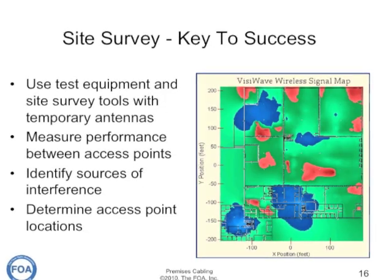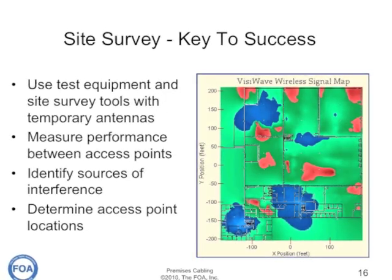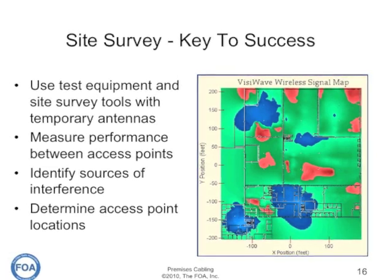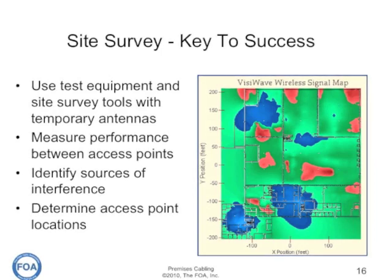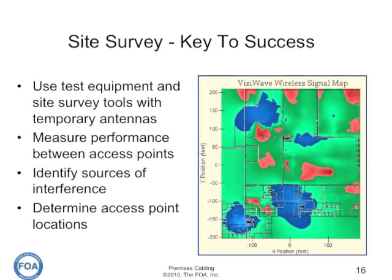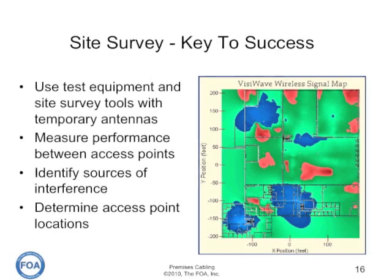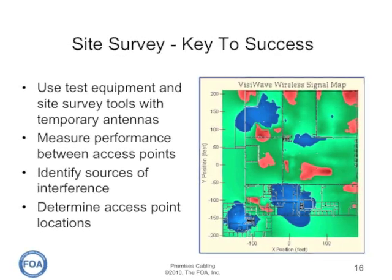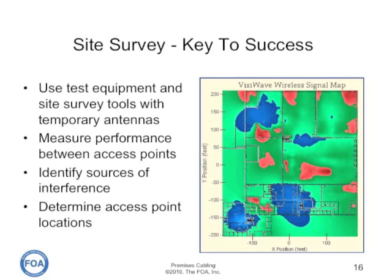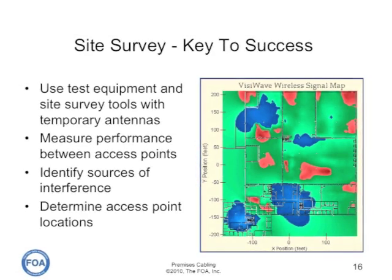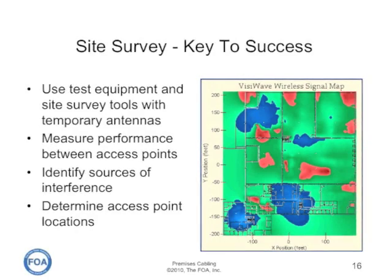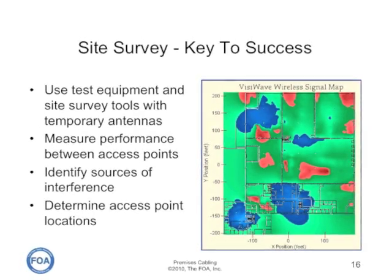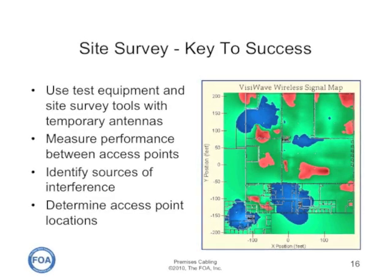The only way to properly design a wireless network is to do a site survey. You use test equipment with site survey tools and temporary antennas and access points. You measure the performance between access points, identify sources of interference, and determine the level of coverage. That is the only way to determine access point locations. Once you determine the access point locations, you should have an adequate wireless network.